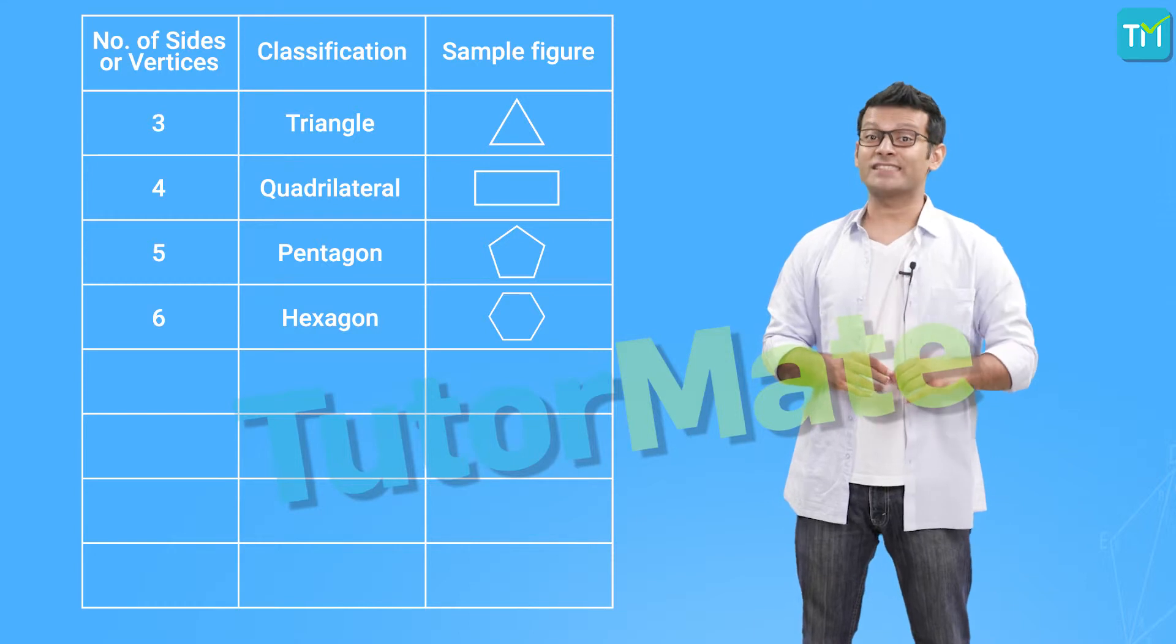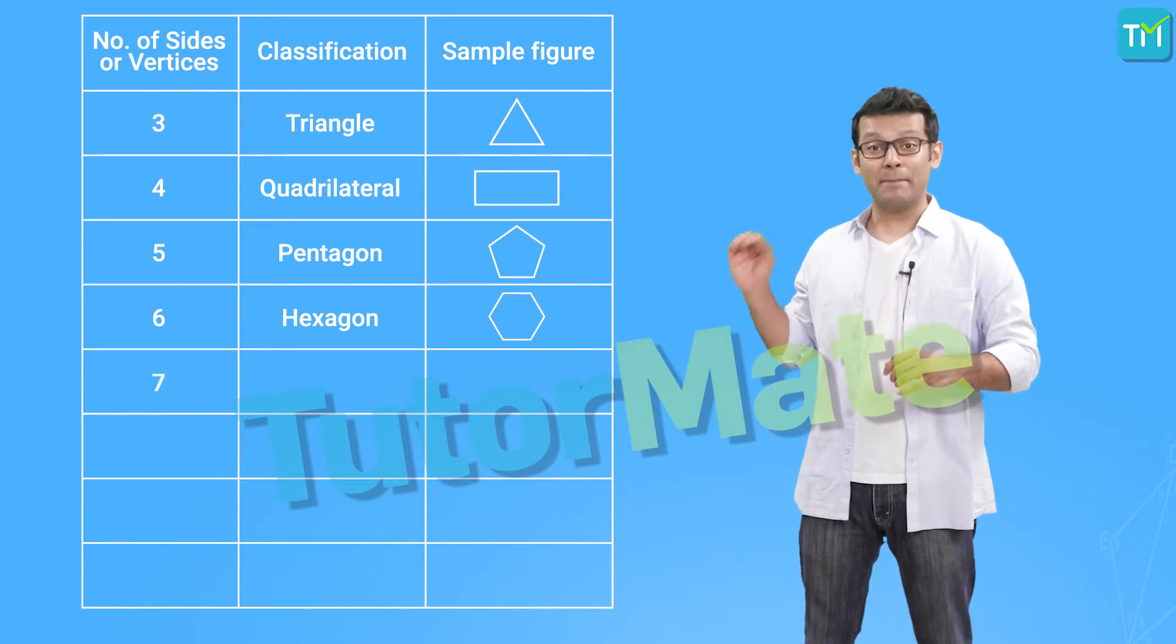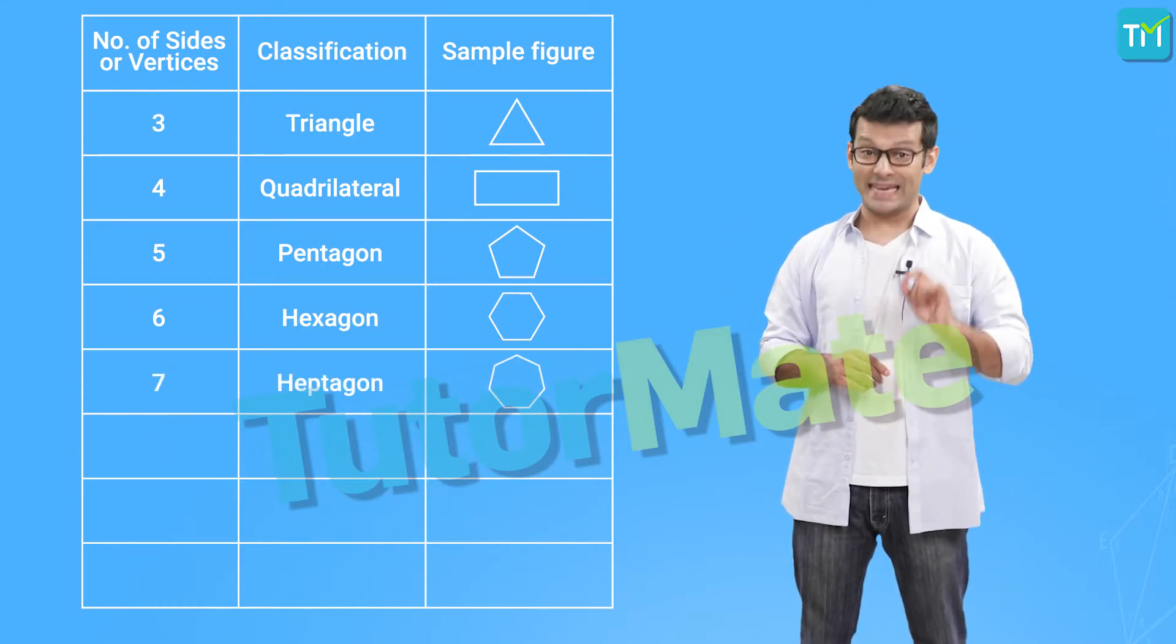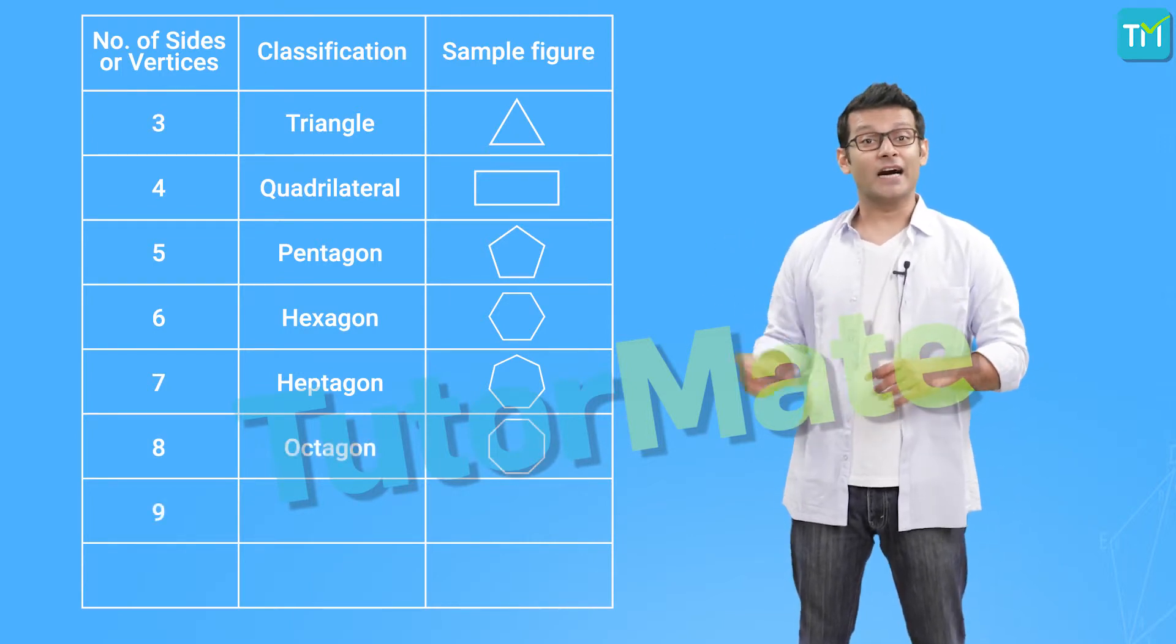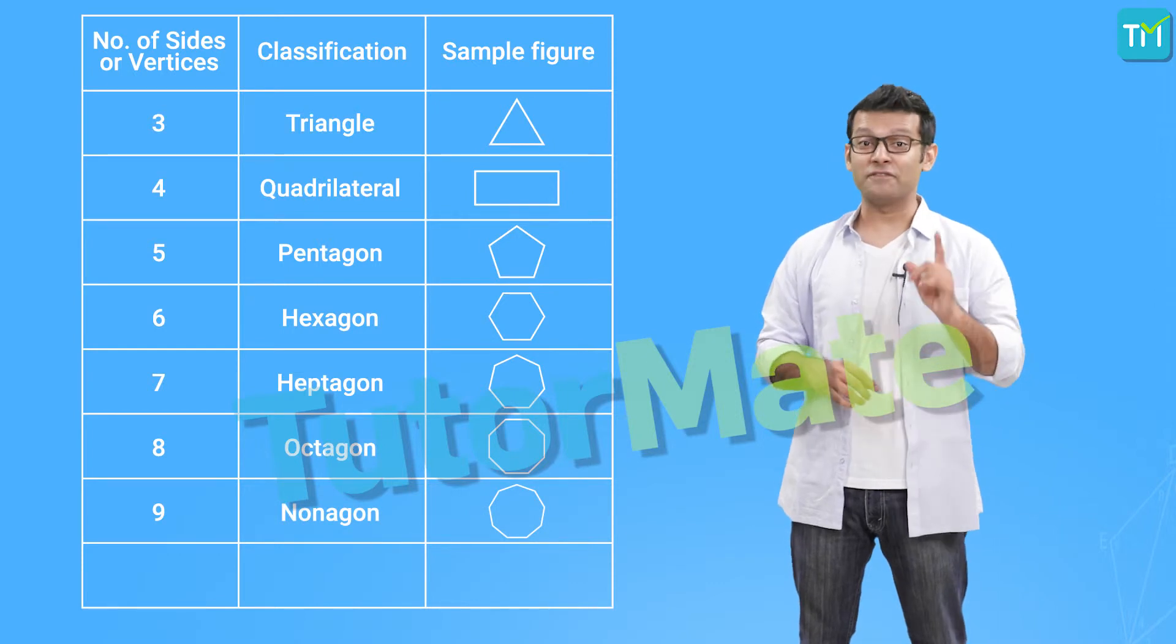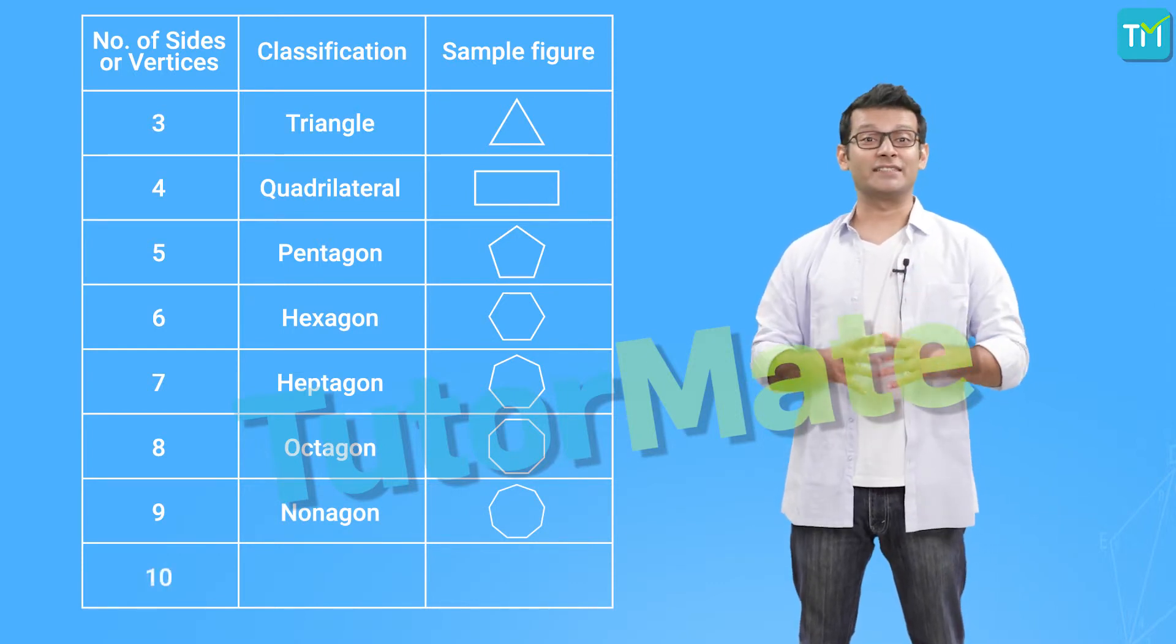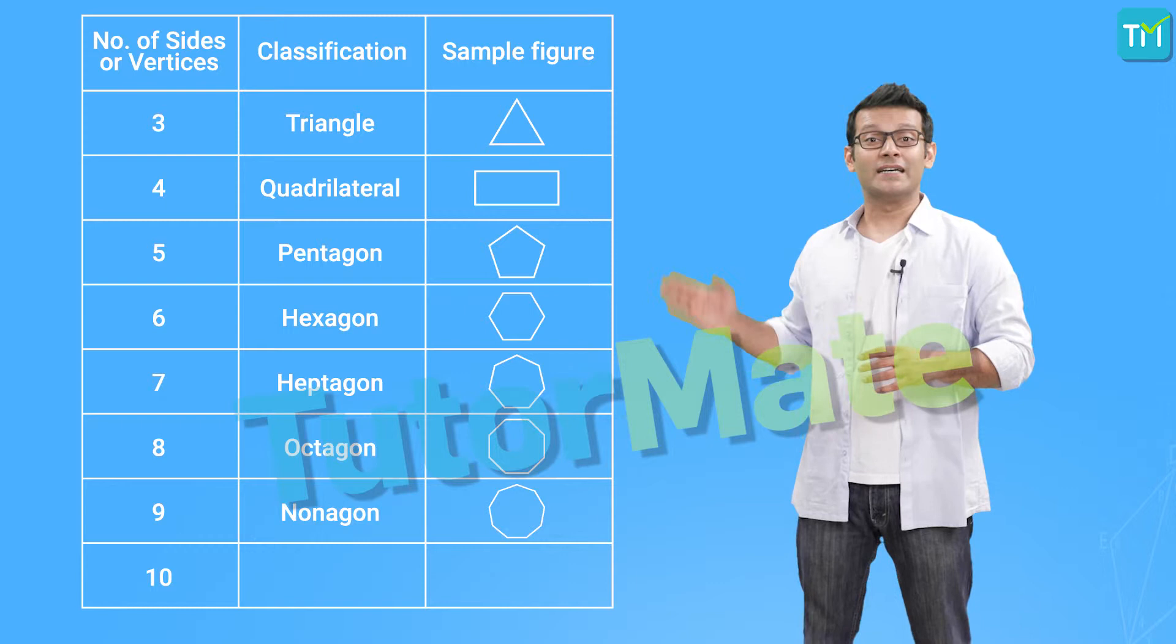Then, the one with seven sides would be a heptagon, with eight sides would be an octagon, with nine sides, a nonagon, and finally, with ten sides, the polygon would be called a decagon.